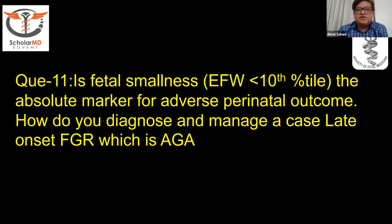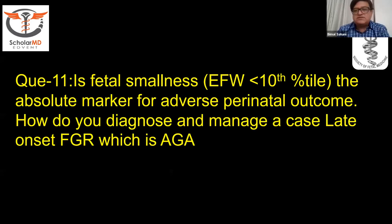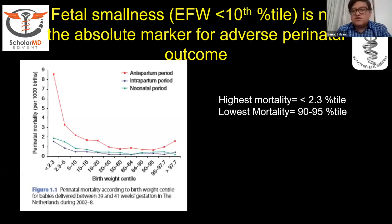The Barcelona Protocol spoke mainly about computerized CTG, but ISUOG has taken conventional CTG into consideration as well. Not necessarily all FGRs will be SGA — you can have an FGR which is AGA. Considering the 10th centile as the only cutoff is a very myopic way of looking at fetal smallness. Even babies between the 10th and 25th centile can have adverse neonatal outcomes. Fetal growth is longitudinal, meaning there can be dynamic changes like a fall of two quartiles from previous fetal growth centiles.